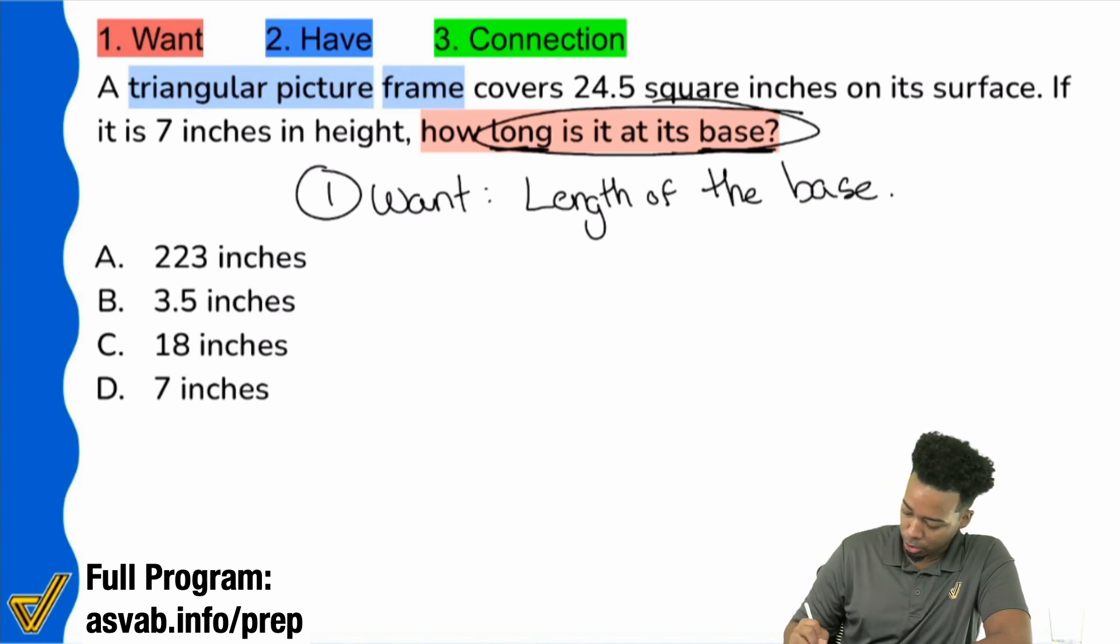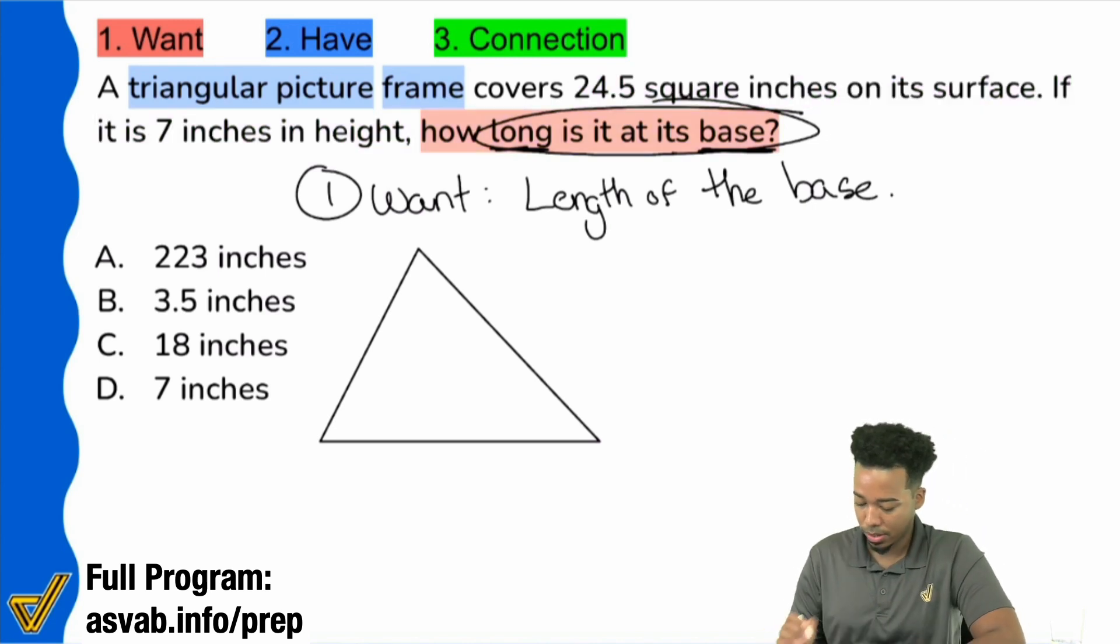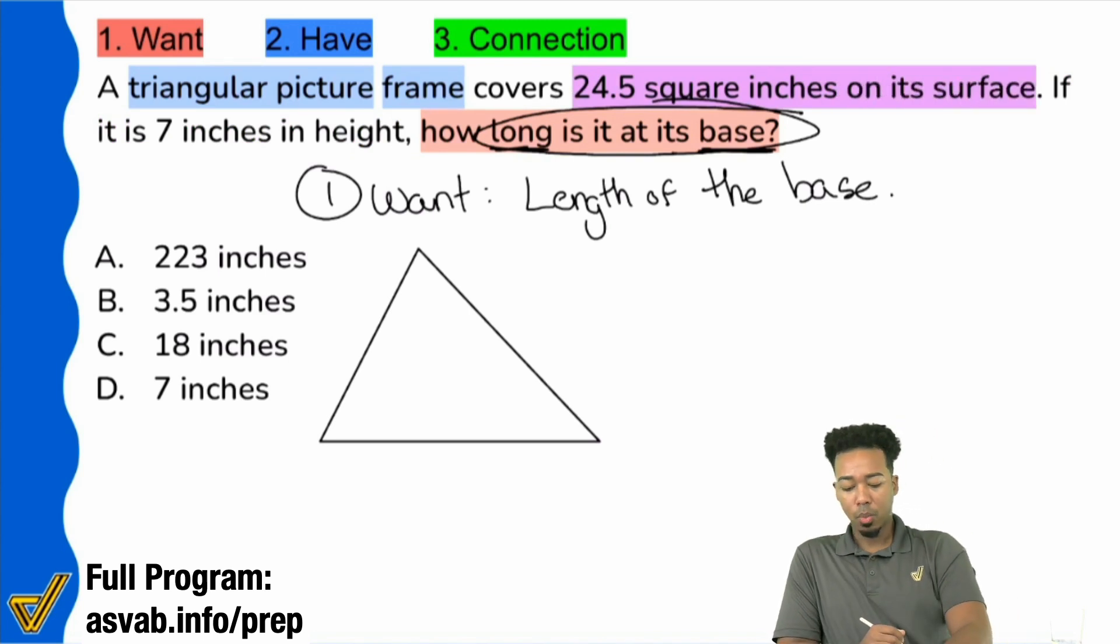So we want the length of the base, and when you start reading the problem, clearly you'll see it says a triangular picture frame. So let's go ahead and highlight that right there. We have a triangular picture frame, and I can go ahead and just draw myself a triangle, nice and easily there. And then it says it covers 24.5 square feet or square inches, excuse me, on its surface. So 24.5 square inches on its surface. What does that mean?